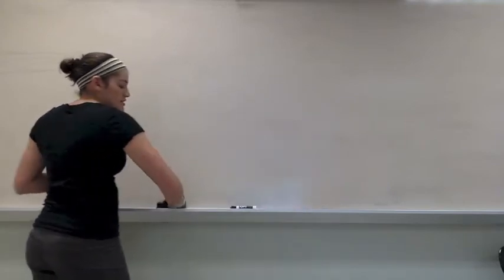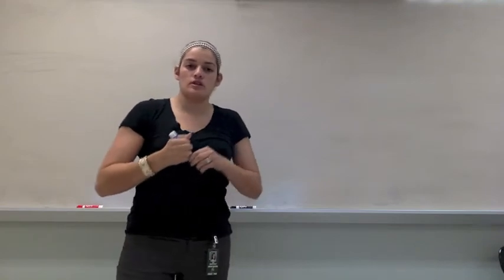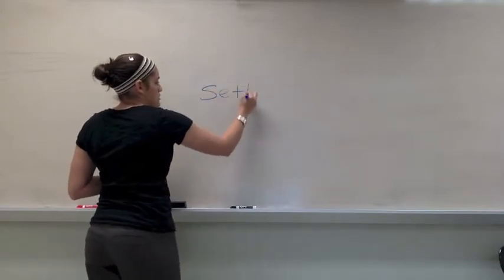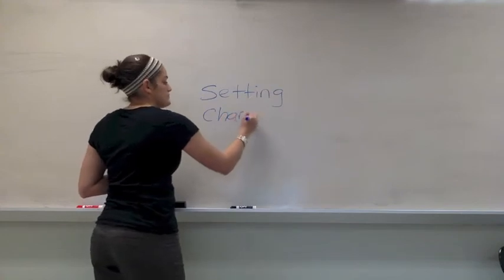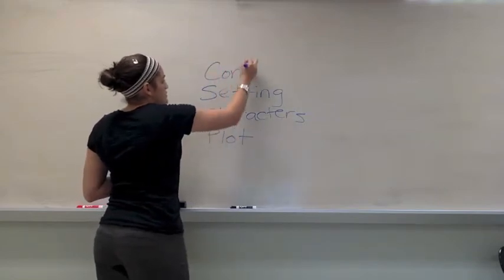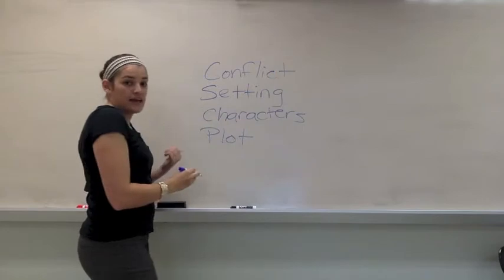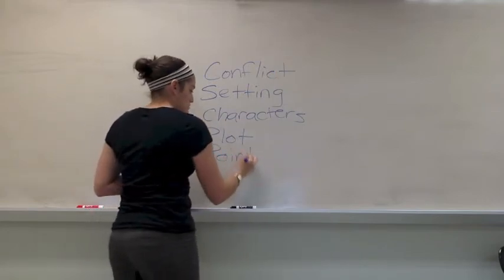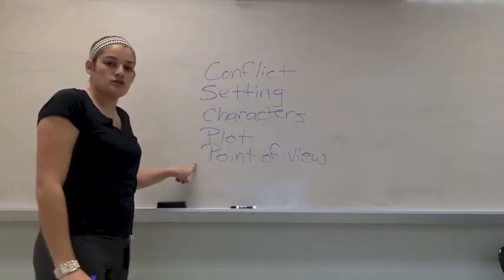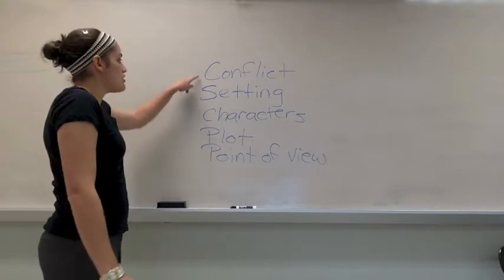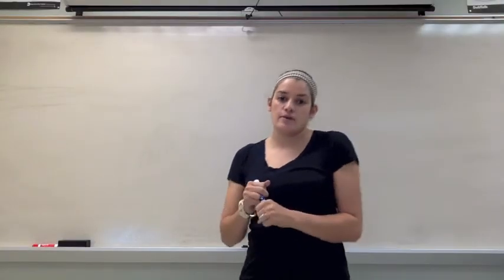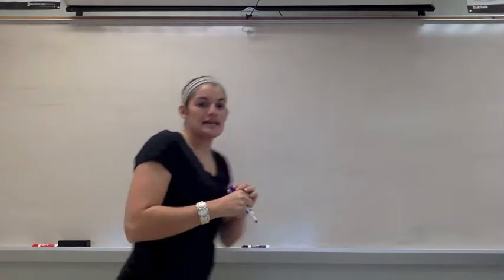Now, the details that you should be looking for in the novel to make these inferences are the elements of a story, which are setting, characters, plot, conflict, and point of view. These are the different story elements that we can look at to help us understand theme, and we also need to look at how they interact with each other. With each of those elements, there are different types of questions that you can ask yourself that will help you in identifying the theme.